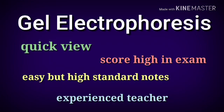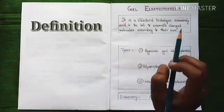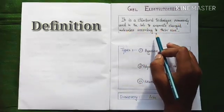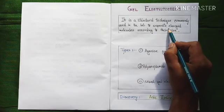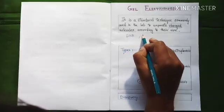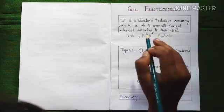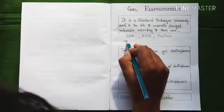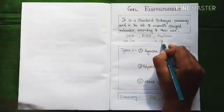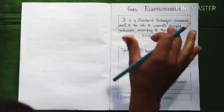Let's start with its definition. Gel electrophoresis is a standard technique commonly used in the lab to separate charged molecules according to their size. What are charged molecules? By the term charged molecules we actually mean DNA, RNA, protein, etc. And what type of charge it may possess, whether it is positive or negative, it will always move to the opposite pole. So this is the basis of gel electrophoresis.